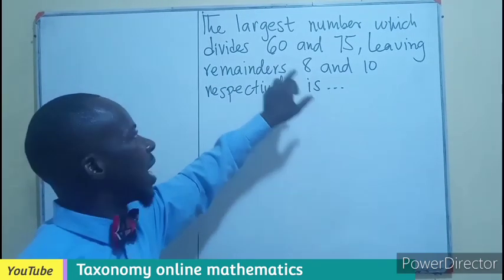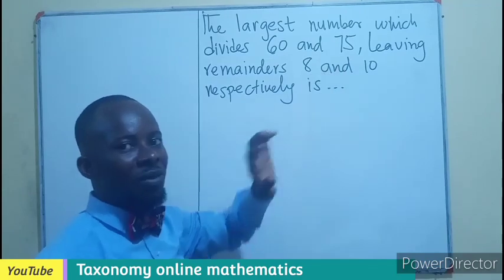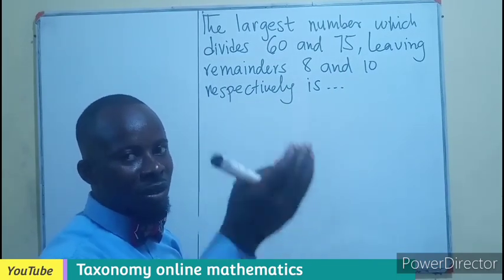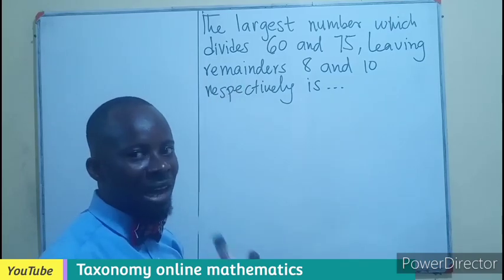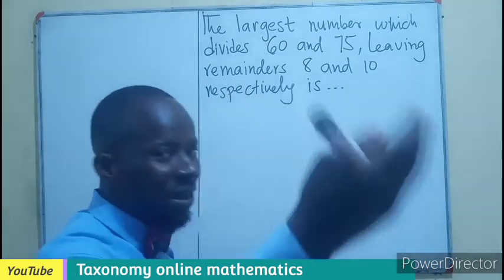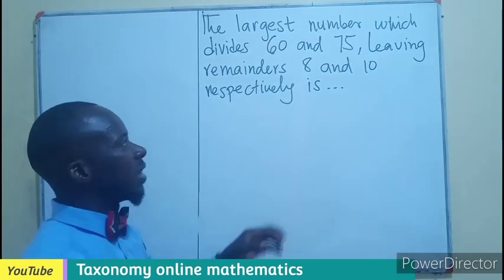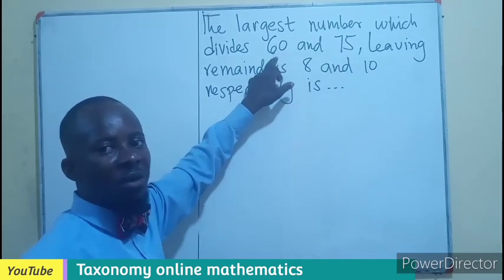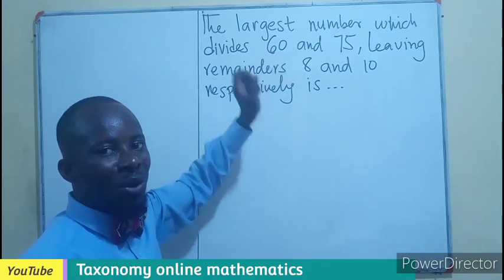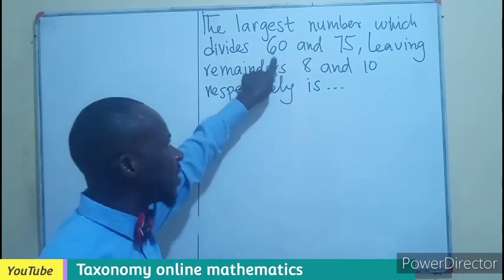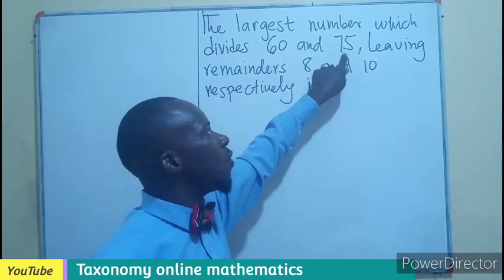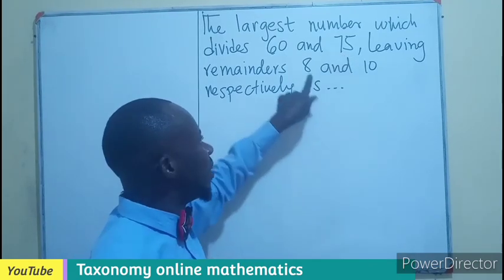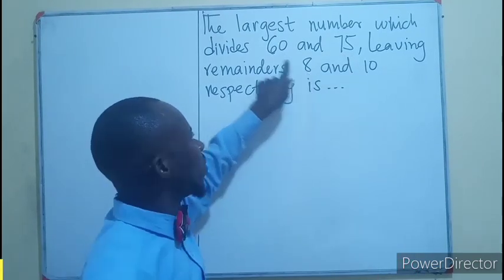Under division we have the dividend, divisor, and quotient. If there's a remainder, it means the factor that is dividing this that we are looking for is not a factor of 60. We're looking for a number that is not a factor of 60 and it's not a factor of 75, but it divided anyway leaving a remainder of 8 for 60 and 10 for 75.